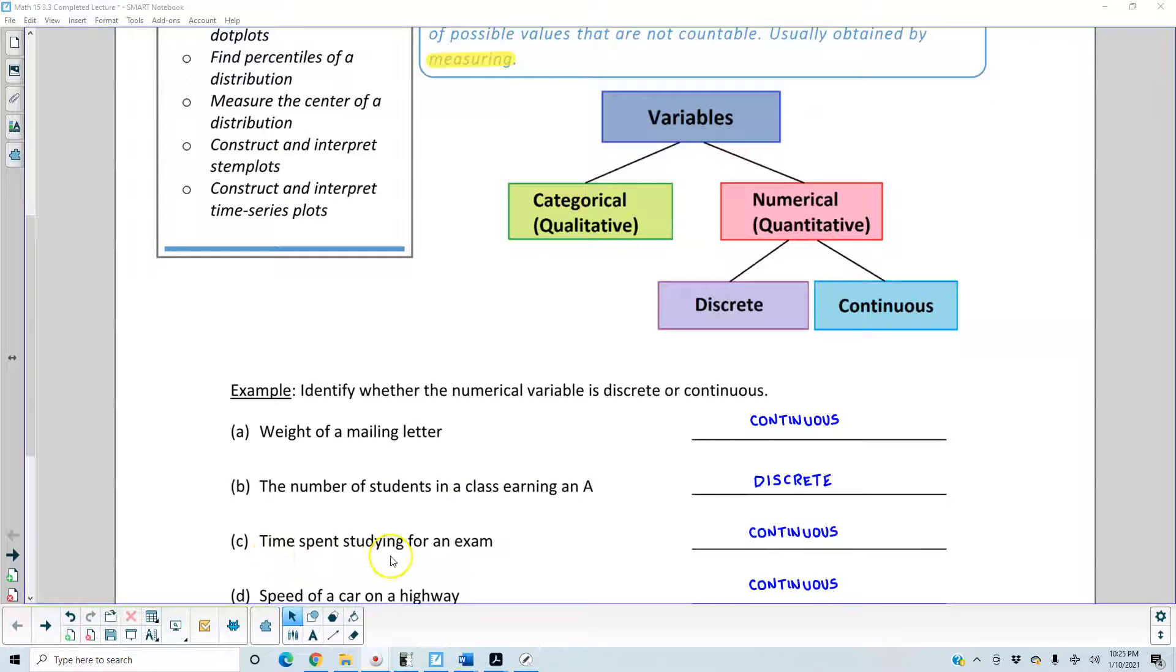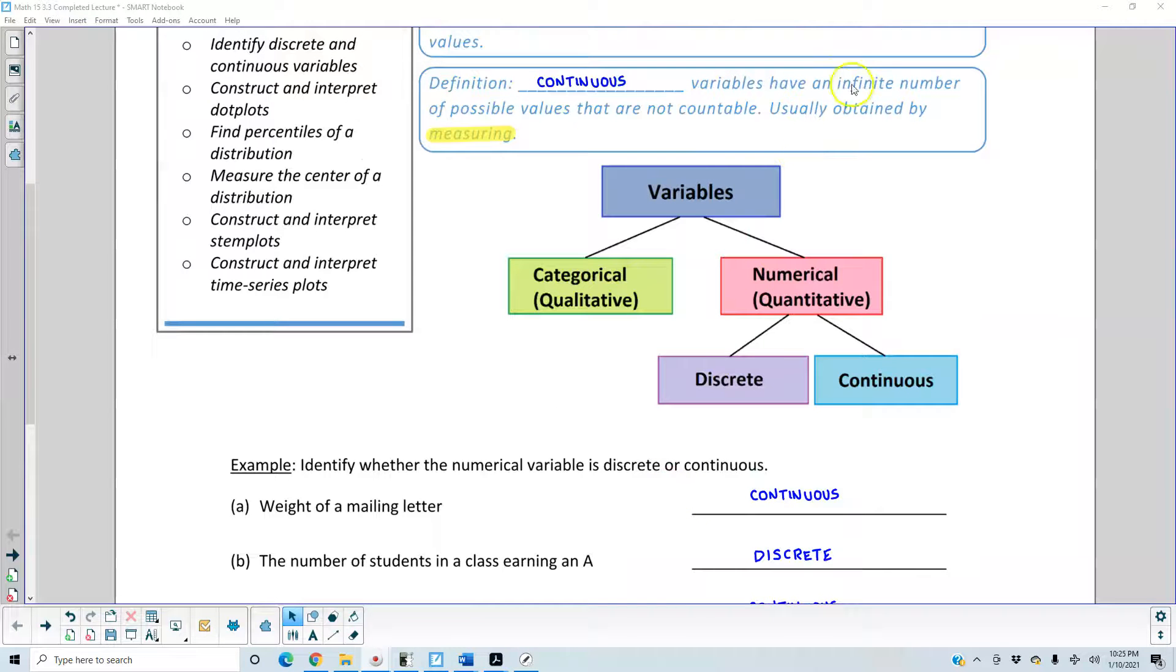Part C: Time spent studying for an exam. This is continuous because in this case, it's an infinite number of possible values that are not countable.